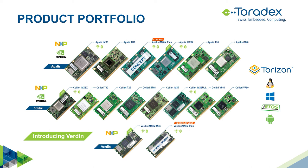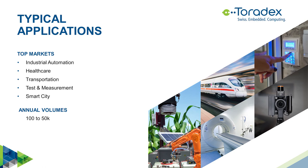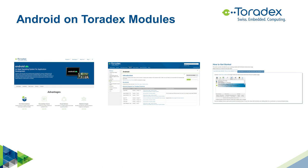On the software side, we have Torizon, an easy-to-use industrial Linux platform, as well as traditional embedded Linux based on Yocto, and Windows CE — those are in-house operating systems. You can also run FreeRTOS or Android, which is provided by our partner Kinetics. Our typical customers are in industrial automation, healthcare, transportation, testing and measurement, and smart cities, with annual volumes ranging from 100 to 50,000 pieces per year.